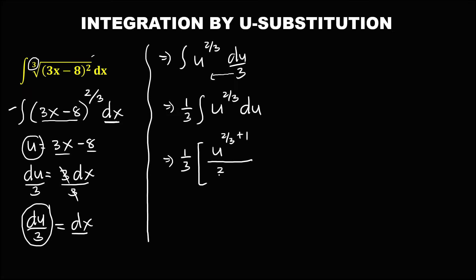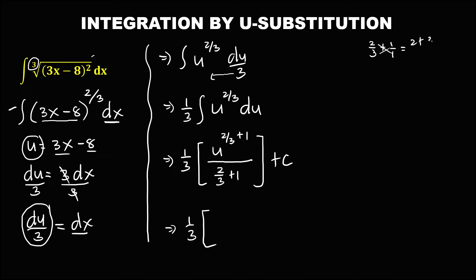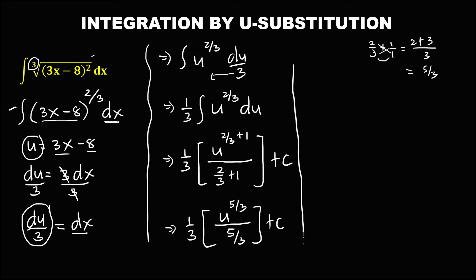Then we have the integral equal to u to the power 2 over 3 plus 1, then plus C. Then to simplify, 1 over 3 times — so 2 over 3 plus 1, apply the butterfly method: 2 times 1 is 2, plus 3 times 1 is 3, over 3 — so this is equal to 5 over 3. So we have u to the power 5 over 3, and also the denominator is 5 over 3, then plus C.